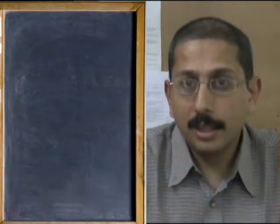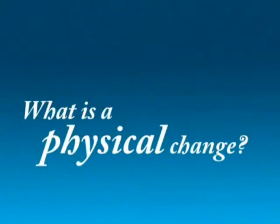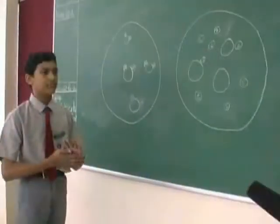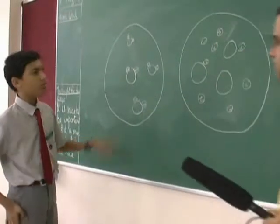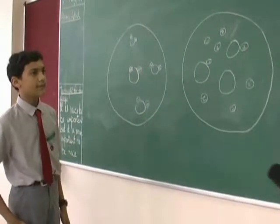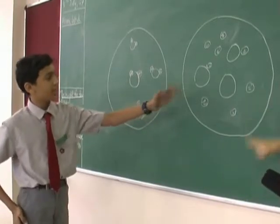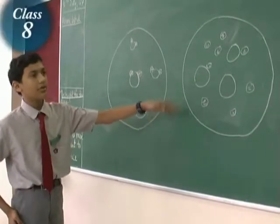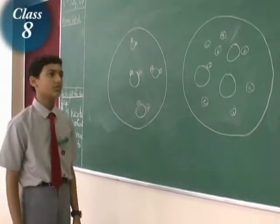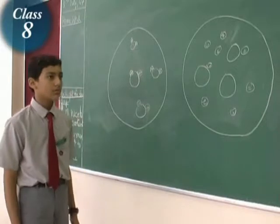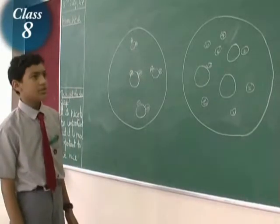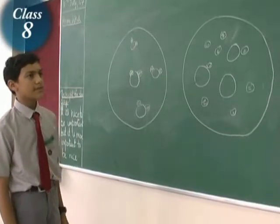Now do children understand this correctly? Let's see. What is the chemical formula of the things inside this? H2O. And this — what did you say? I'm not sure. This is separated into hydrogen and oxygen. So is this a physical change or a chemical change? It's a physical change.